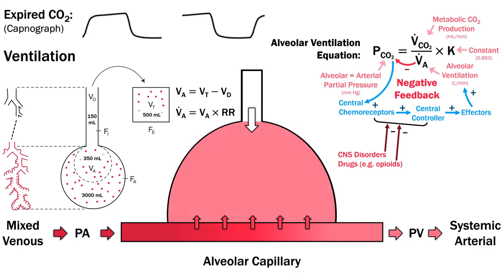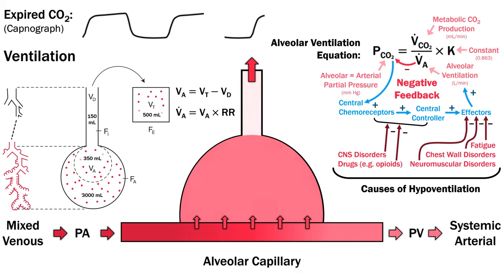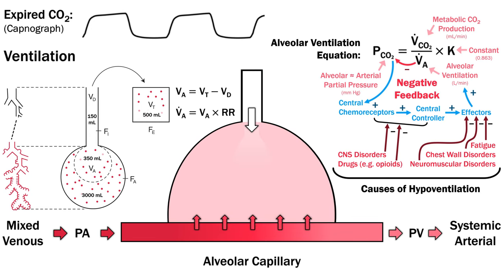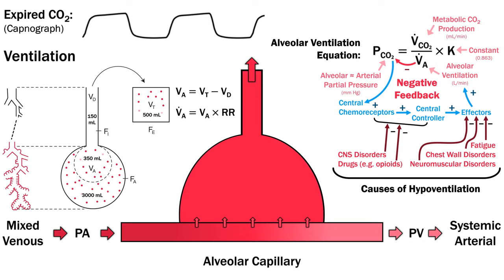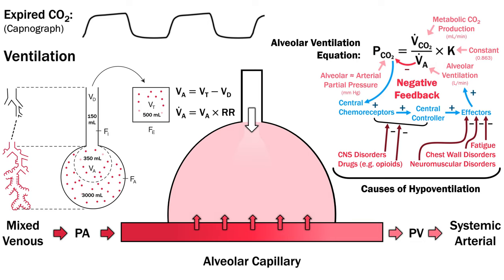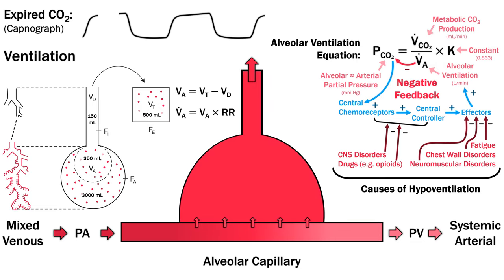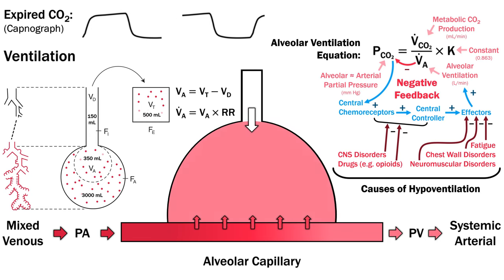For peripheral causes you can follow the effector pathway down from the brain stem to motor neurons, the neuromuscular junction, the muscle itself, musculoskeletal abnormalities such as kyphoscoliosis and other factors affecting the chest such as severe obesity.